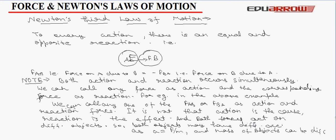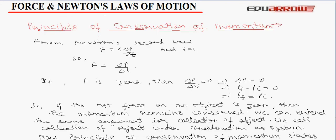Now, let us understand the principle of conservation of momentum. From Newton's second law, we have F equals to K del P upon del T and K equals to 1 as we know. So, F is equal to del P upon del T. Now, if force on an object becomes 0, then del P upon del T is equal to 0. This implies that del P is equal to 0, P_F minus P_I equals to 0. So, P_F comes out to be equal to P_I. So, if the net force on an object is 0, then the momentum remains conserved.